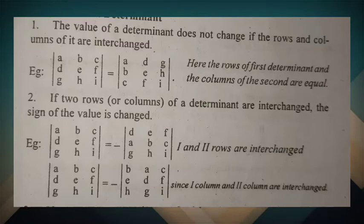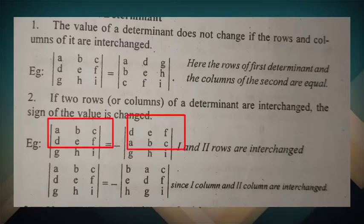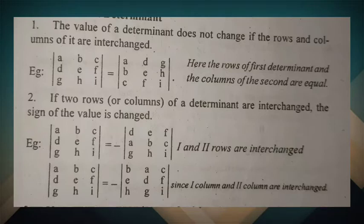Second property: if two rows or columns of a determinant are interchanged, the sign of the value is changed. When the row number and column number are changed in the same way, the sign of the determinant value changes — it becomes negative.